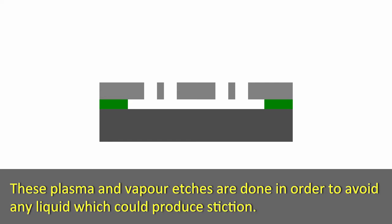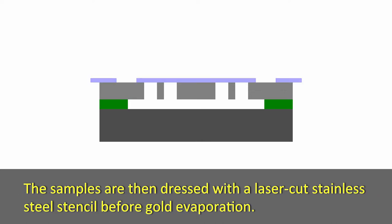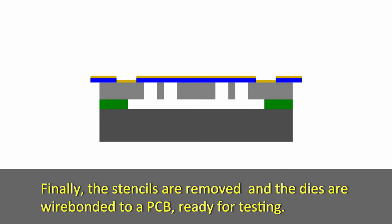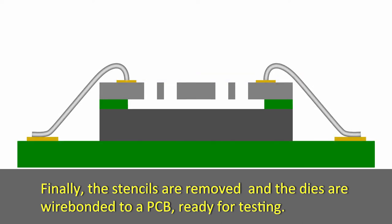These plasma and vapor etches are done in order to avoid any liquid which could produce stiction. The samples are then dressed with a laser-cut stainless steel stencil before gold evaporation. Finally, the stencils are removed and the die are wire bonded to a PCB, ready for testing.